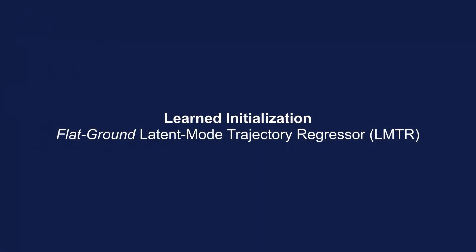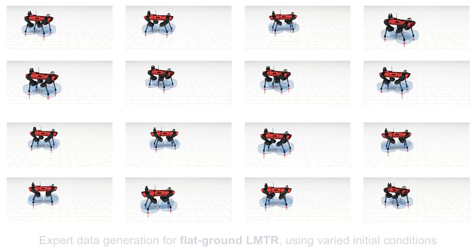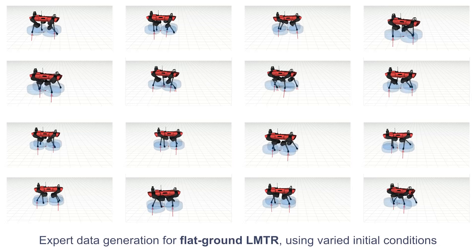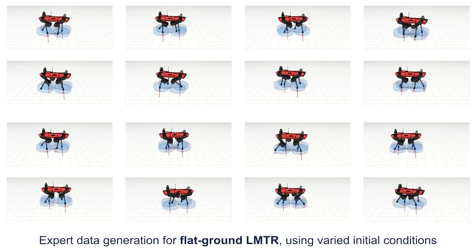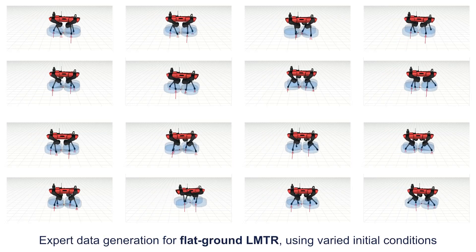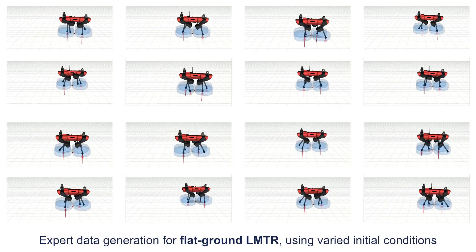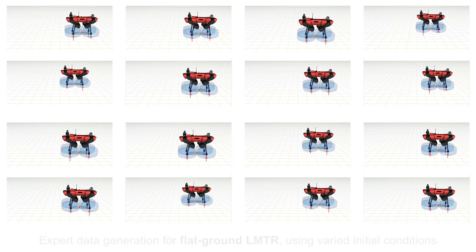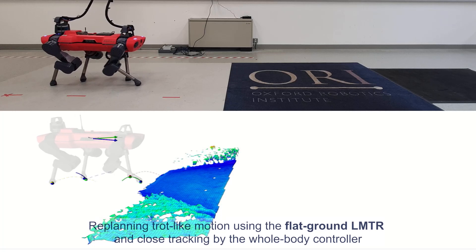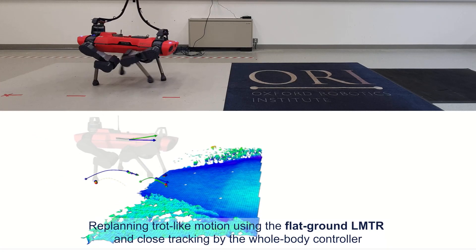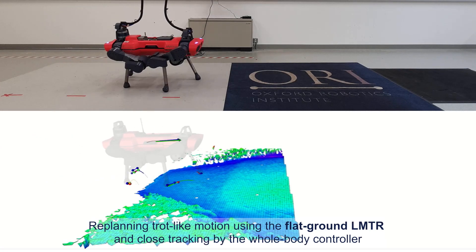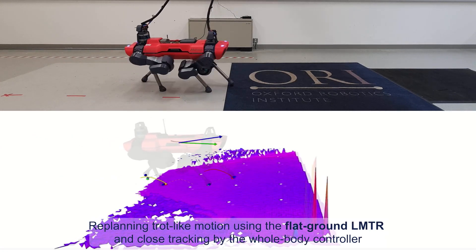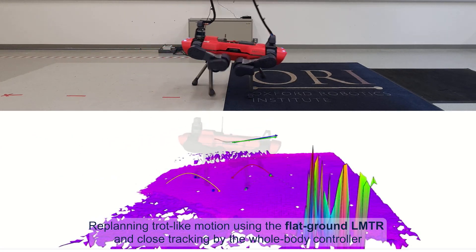We started with locomotion on flat ground. By generating expert data with varying initial conditions, we successfully executed a dynamic trot-like motion initialized by the LMTR with minimal tracking error.